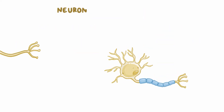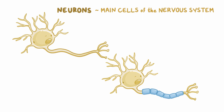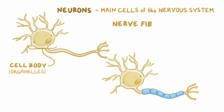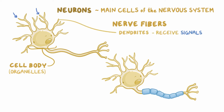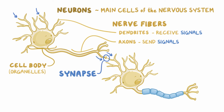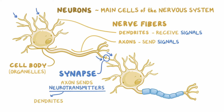Neurons are the main cells of the nervous system. They're composed of a cell body, which contains all of the cell's organelles, and nerve fibers, which are projections that extend out from the neuron cell body. Nerve fibers are either dendrites that receive signals from other neurons, or axons that send signals along to other neurons. Where two neurons come together is called a synapse, and that's where one end of an axon sends neurotransmitters to the dendrites or directly to the cell body of the next neuron in the series.